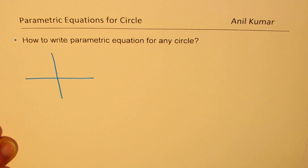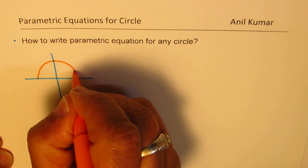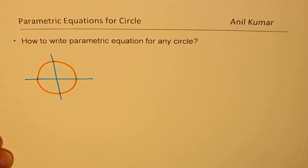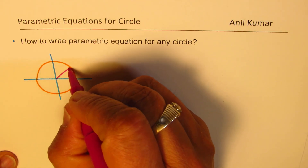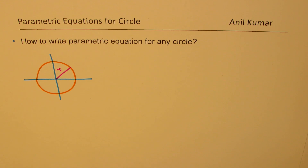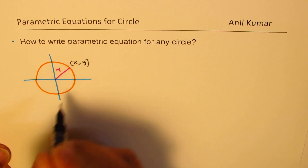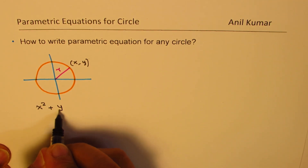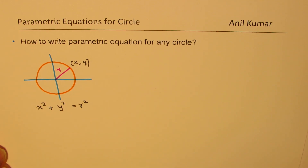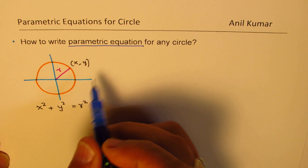Let us begin with the circle. Let us say we have a circle with center at the origin, with radius r. Any particular point on the circle will be given by x and y, and the equation is x squared plus y squared equals r squared.